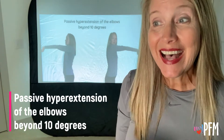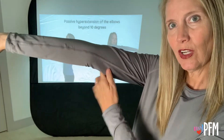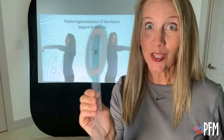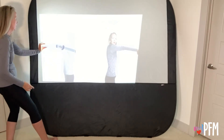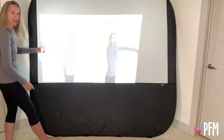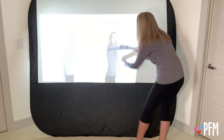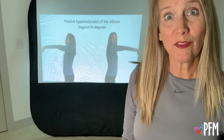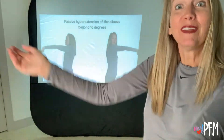The third test is passive hyperextension of the elbows beyond 10 degrees. We're looking at the elbow joint to see if it's neutral or if it goes past 10 degrees. Using the goniometer to measure on myself, that is positive on my left side, and also positive on my right. Both were between 10 to 12 degrees — greater than 10 degrees — showing that I have pretty flexible joints there.